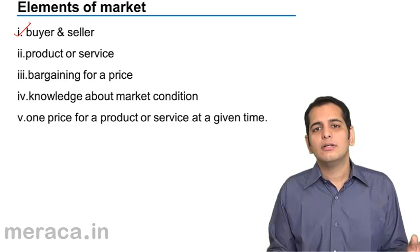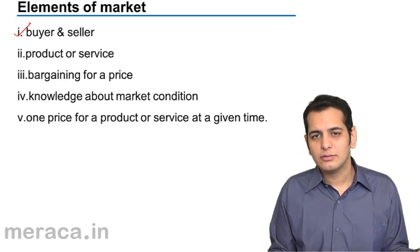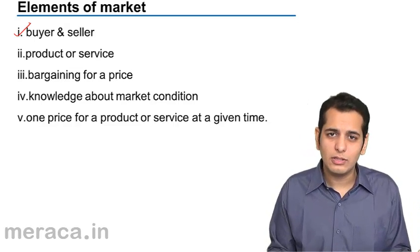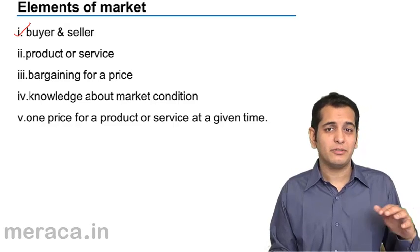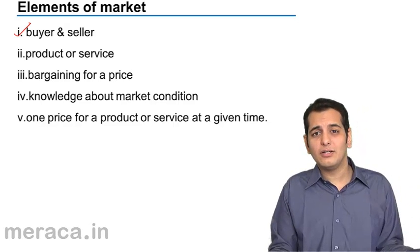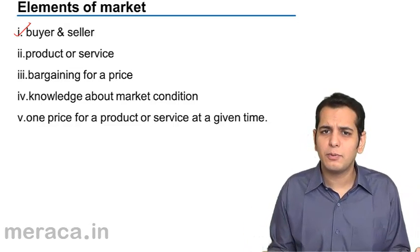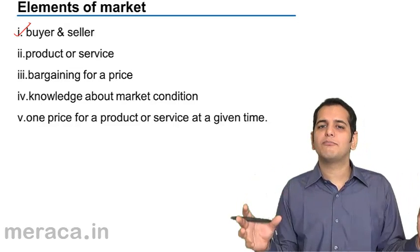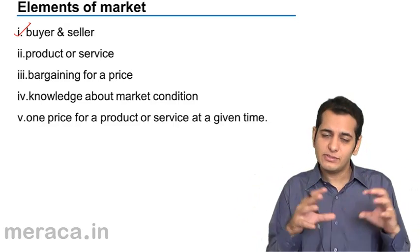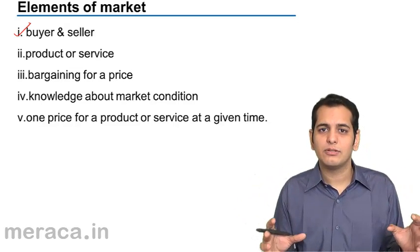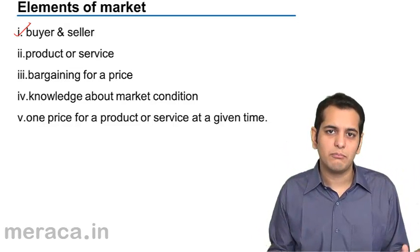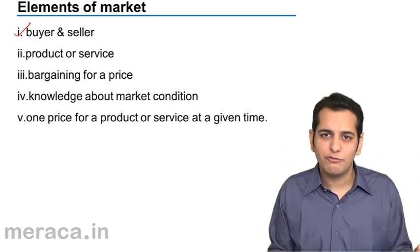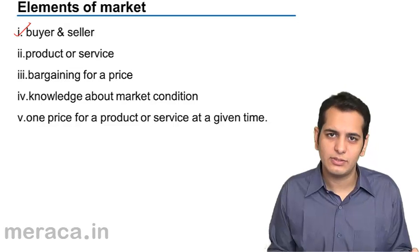Because if there won't be buyers, sellers won't be able to sell. At the same time, if there won't be sellers, from whom would the buyers buy? Unless the transaction of buy and sell happens, we cannot call it a market. So market is a function of buyers and sellers.